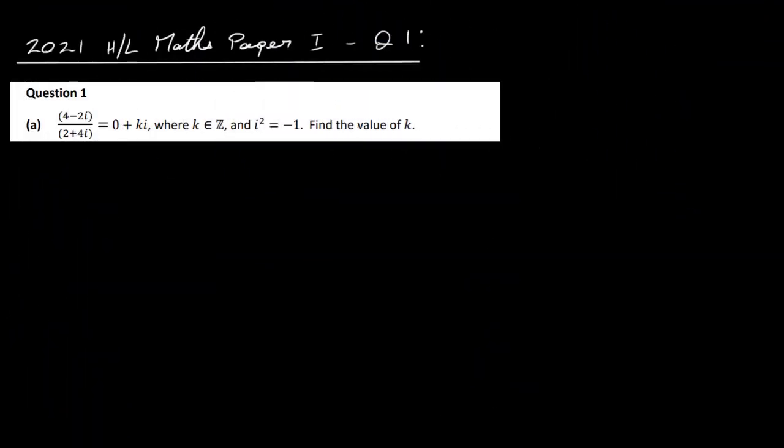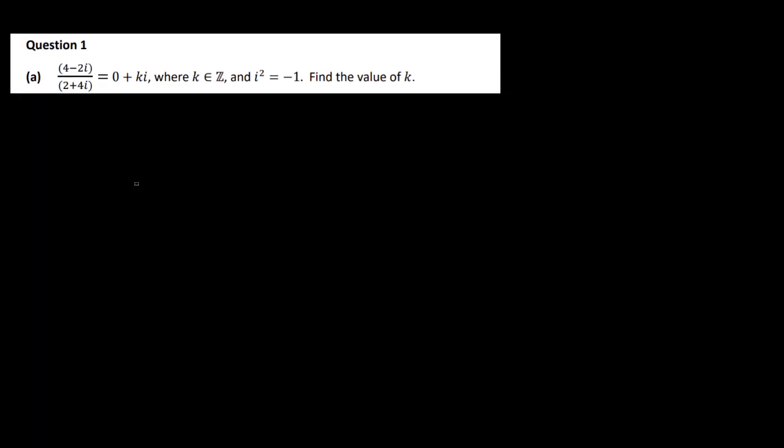Let's have a look at the 2021 Higher Level Maths Paper 1, question 1. This is a complex number type question. There are a couple of ways of doing this — I'll do it both ways, actually.